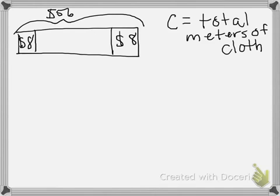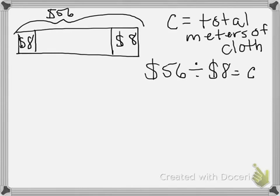So we are finding C in this case. So we have $56 divided by $8 equals C. Maria has purchased 7 meters of cloth.